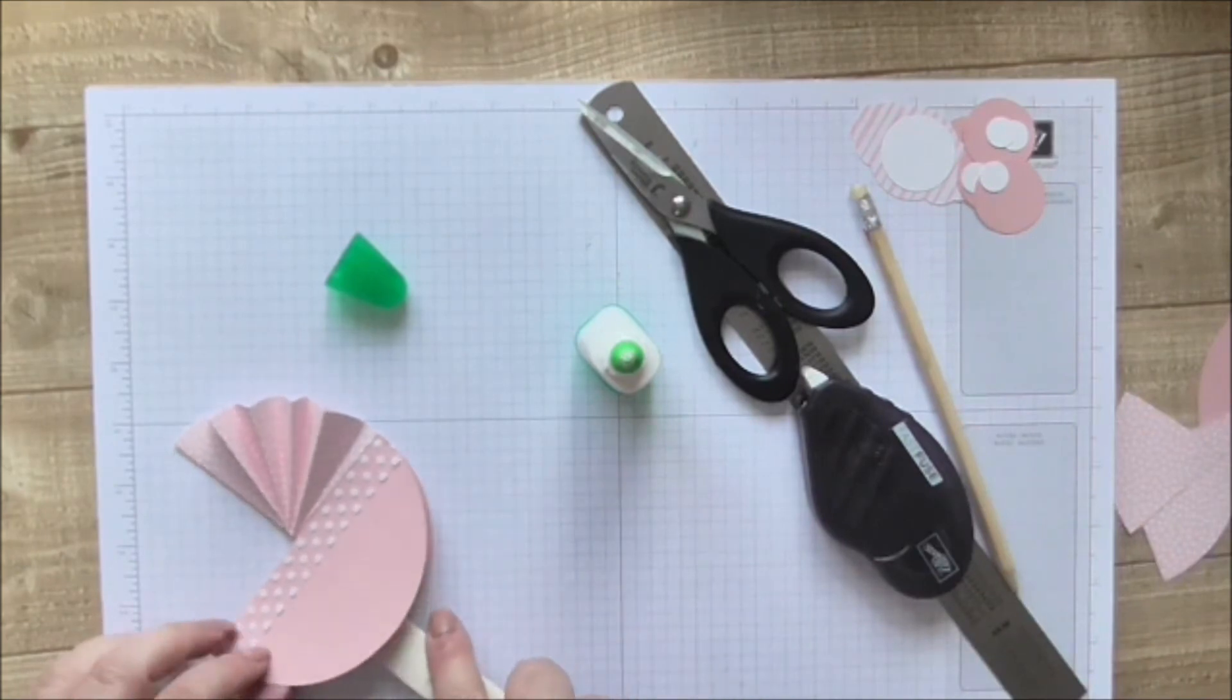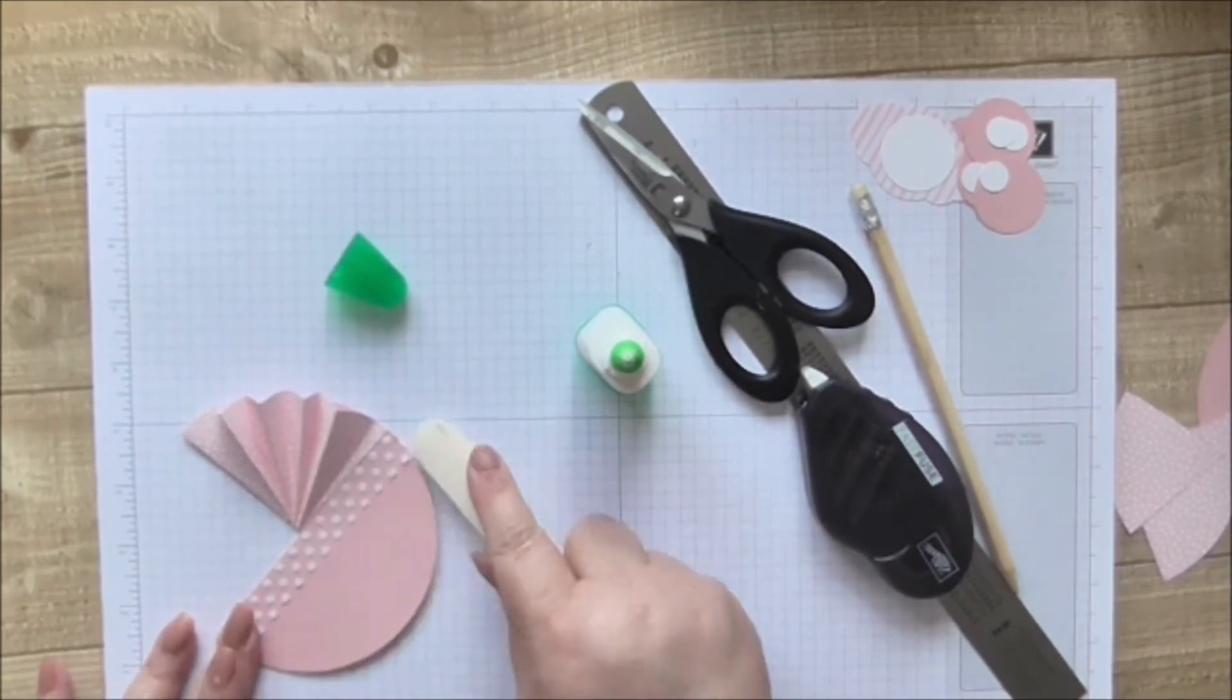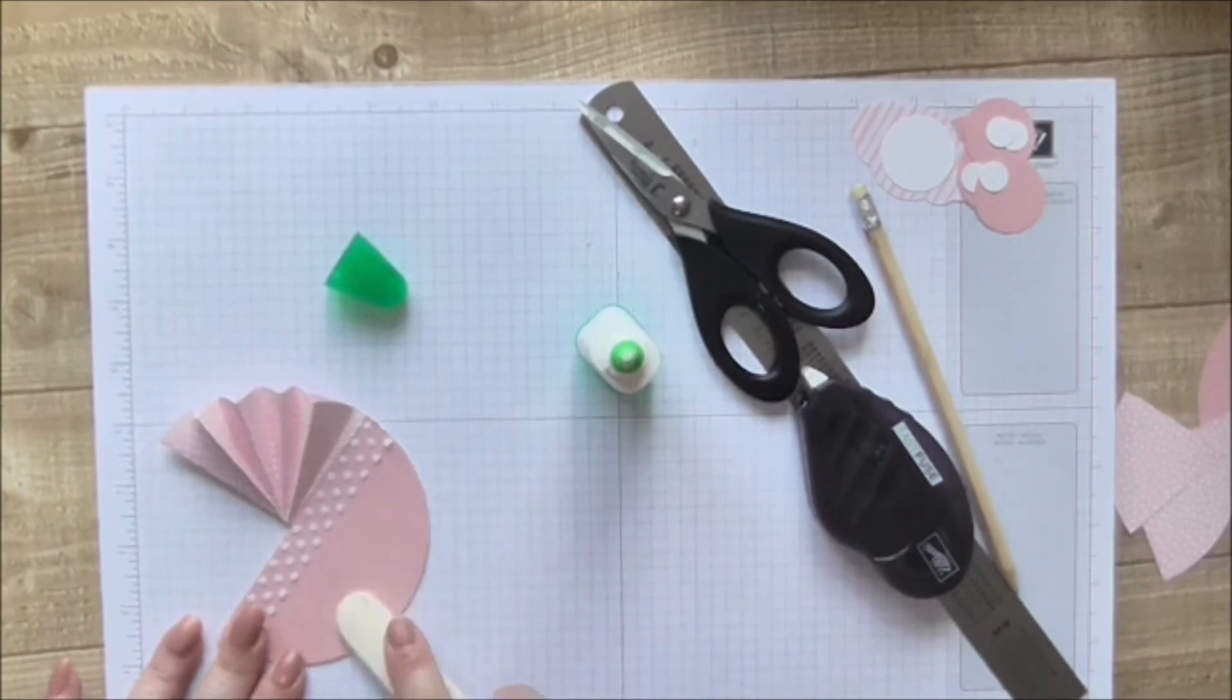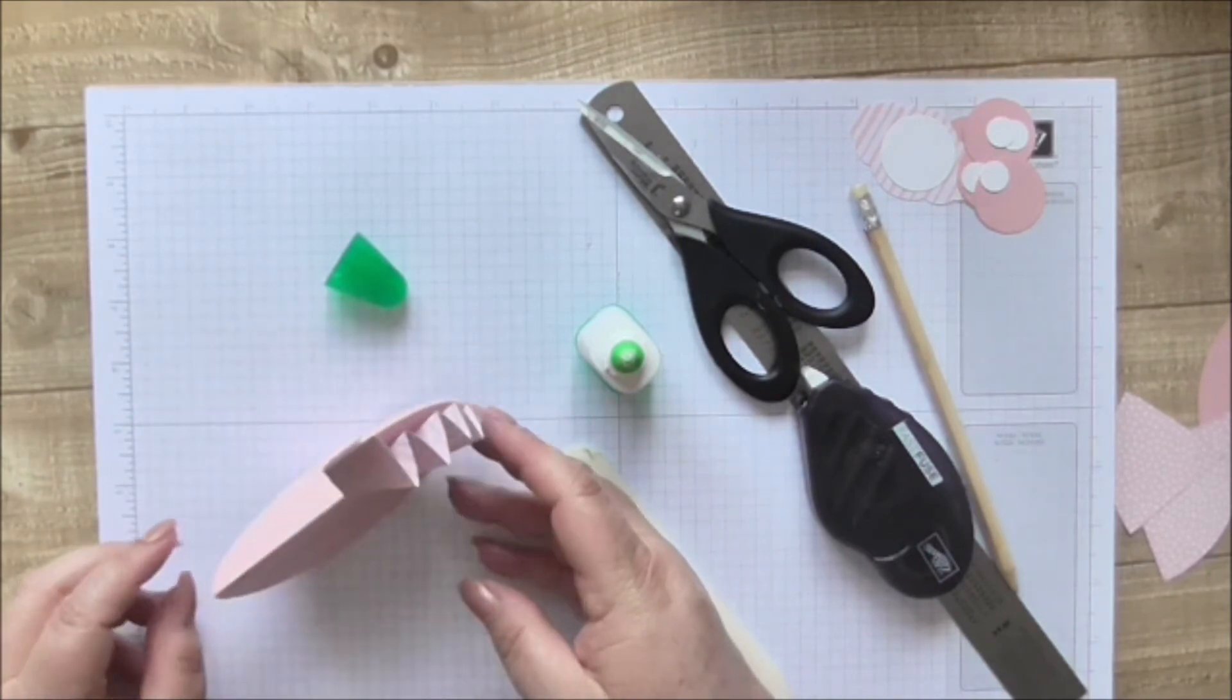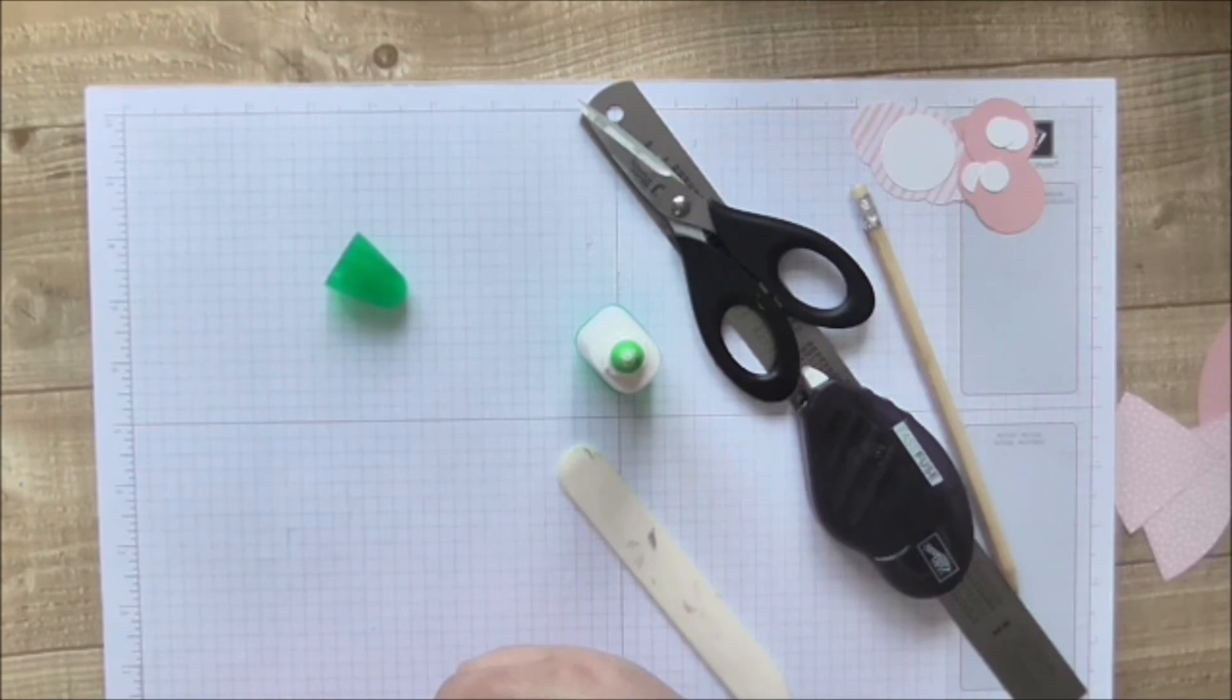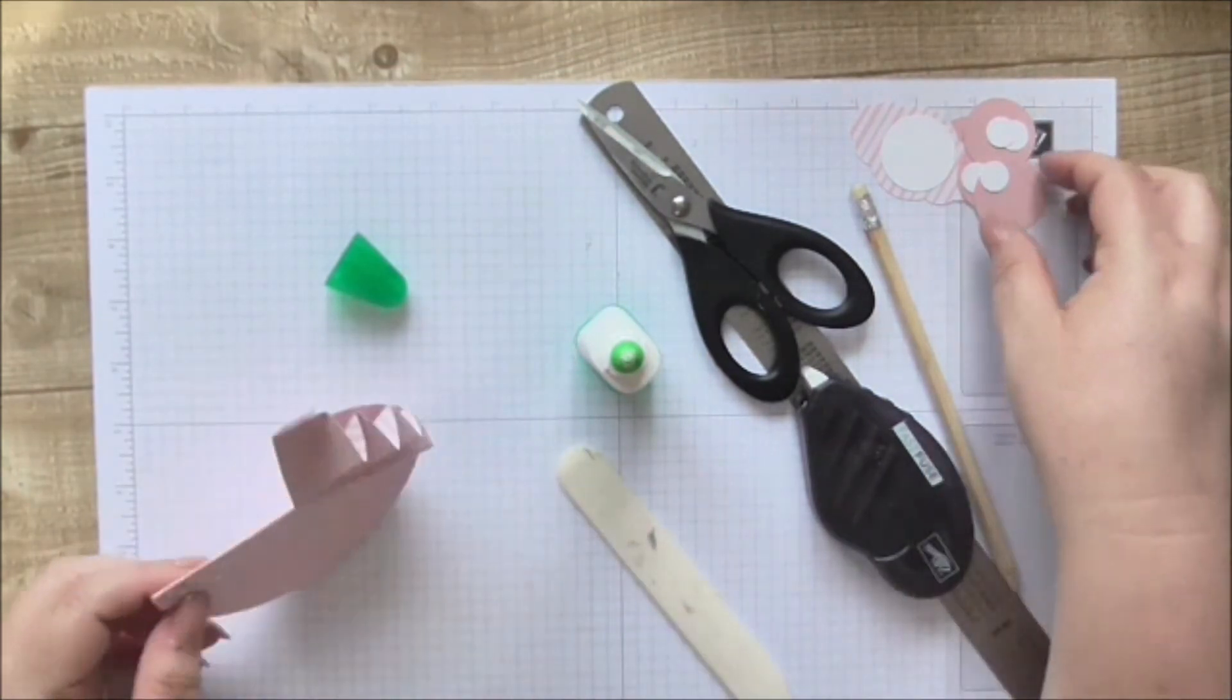Stick that on the back there. Give that a good pressing down with the bone folder. That I mean that could be like a crib. Oh no I've got a dirty mark underneath. Never mind. Right, so then we're going to put the wheels on because the wheels will stop it from doing that.